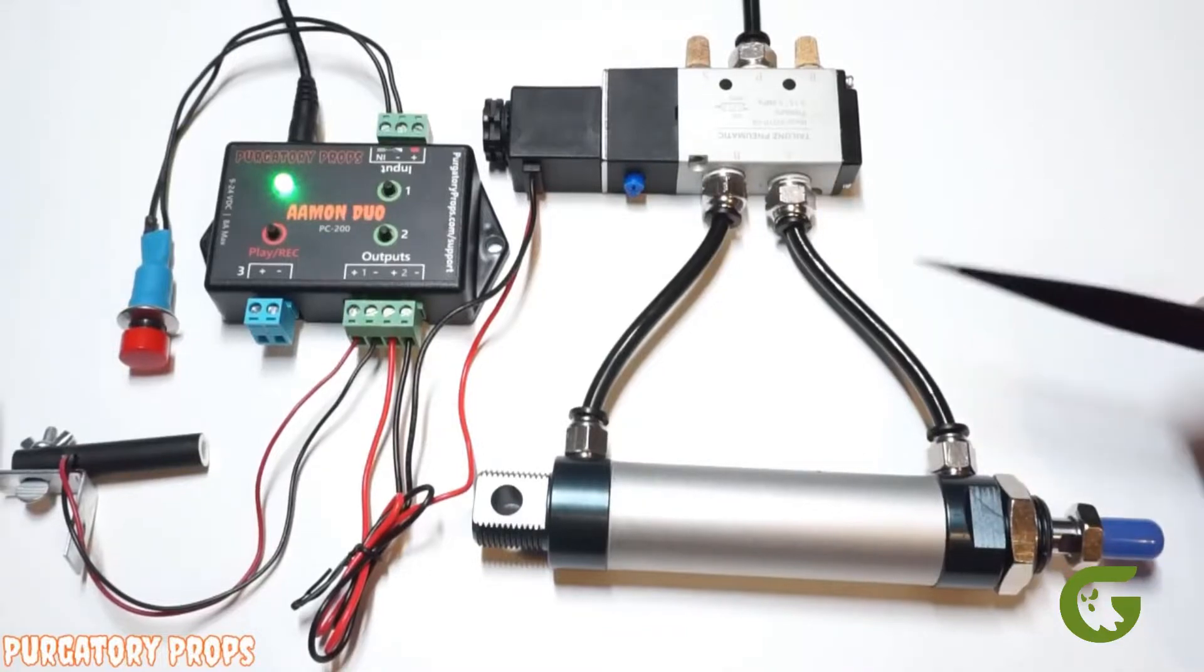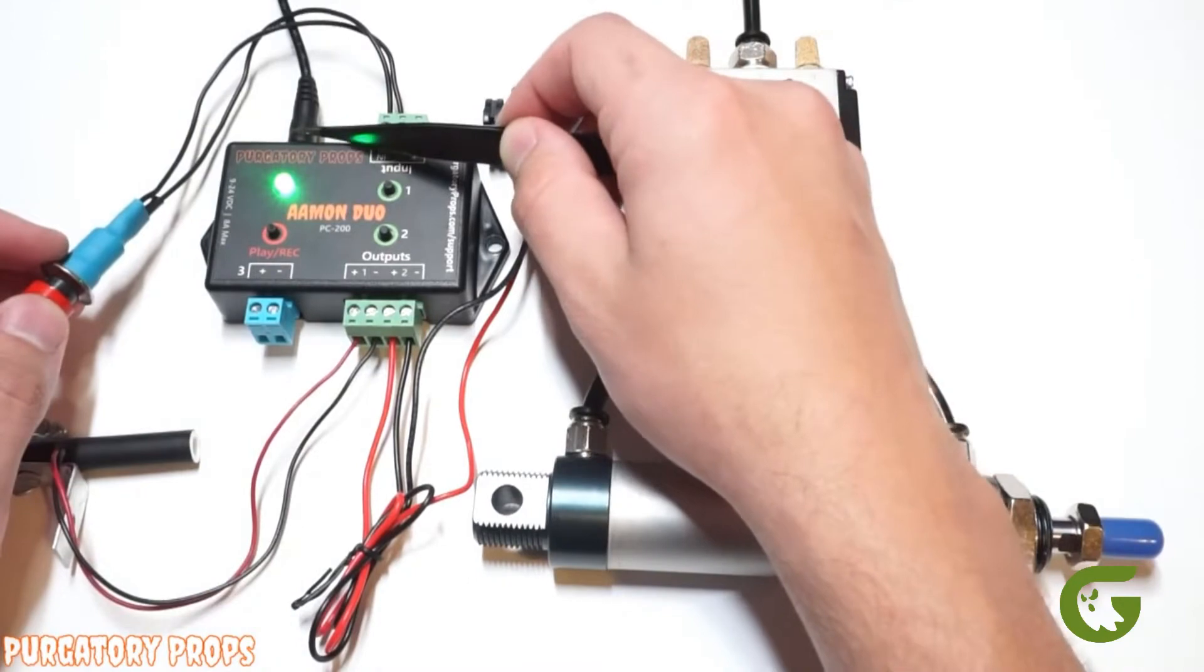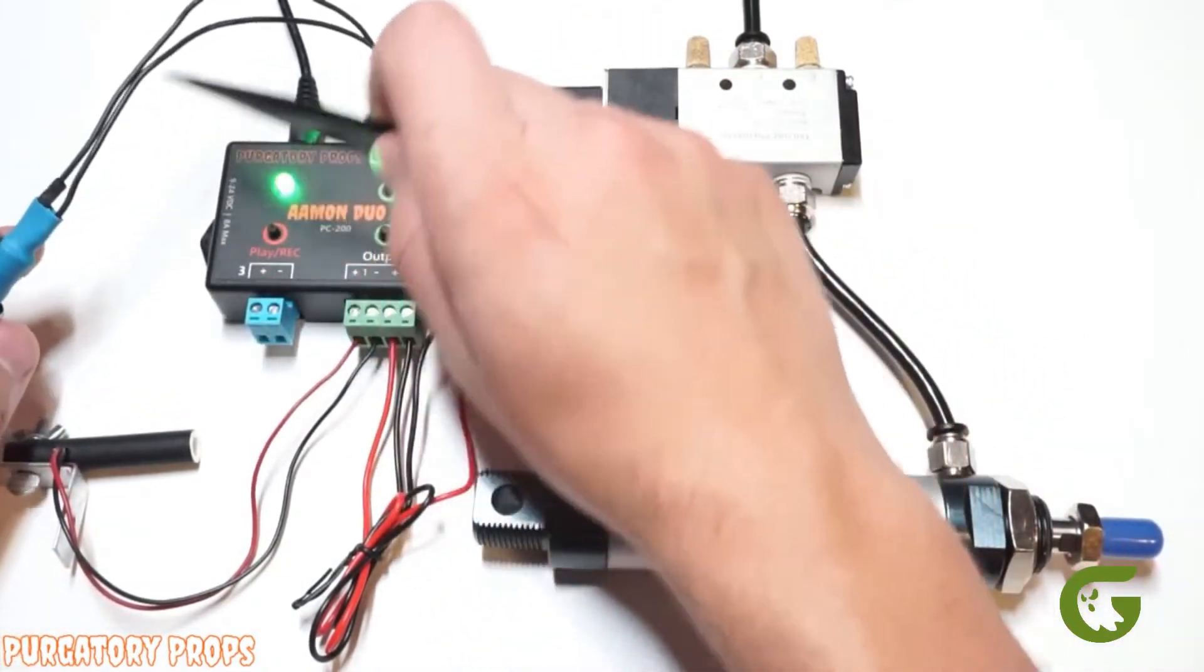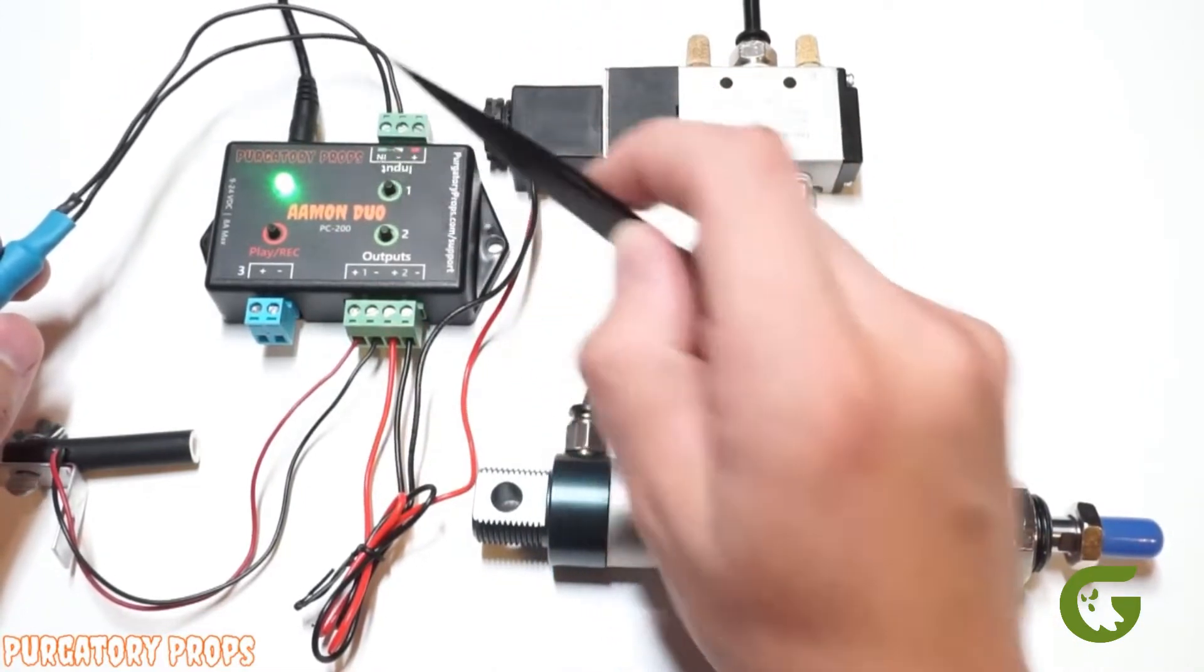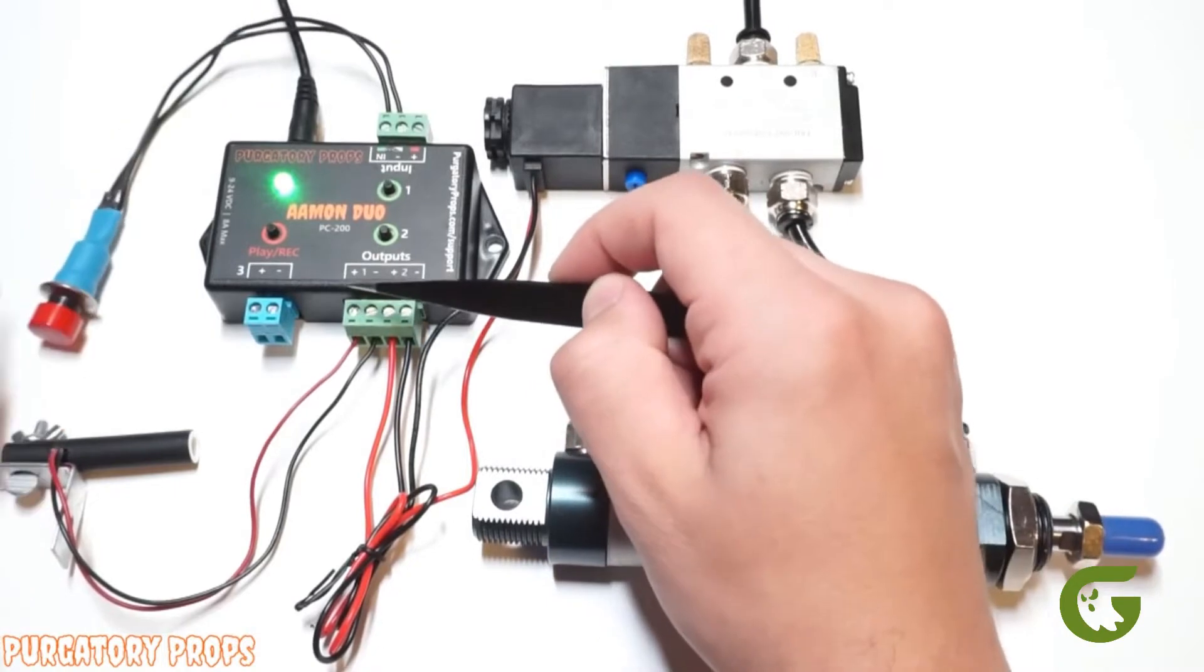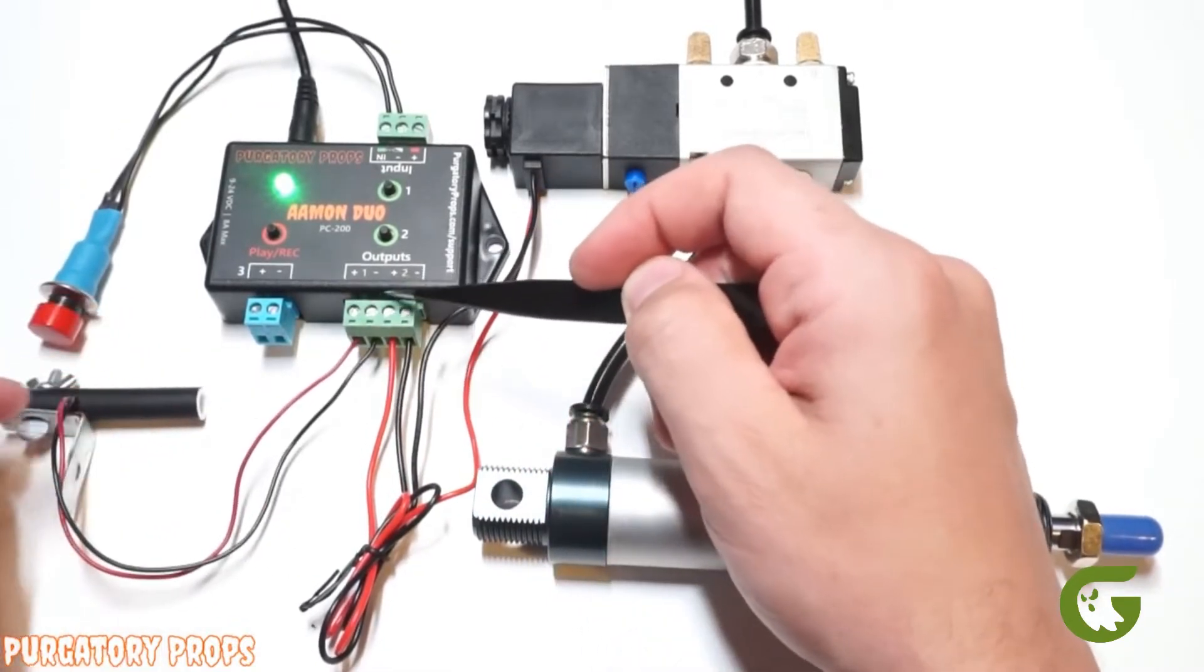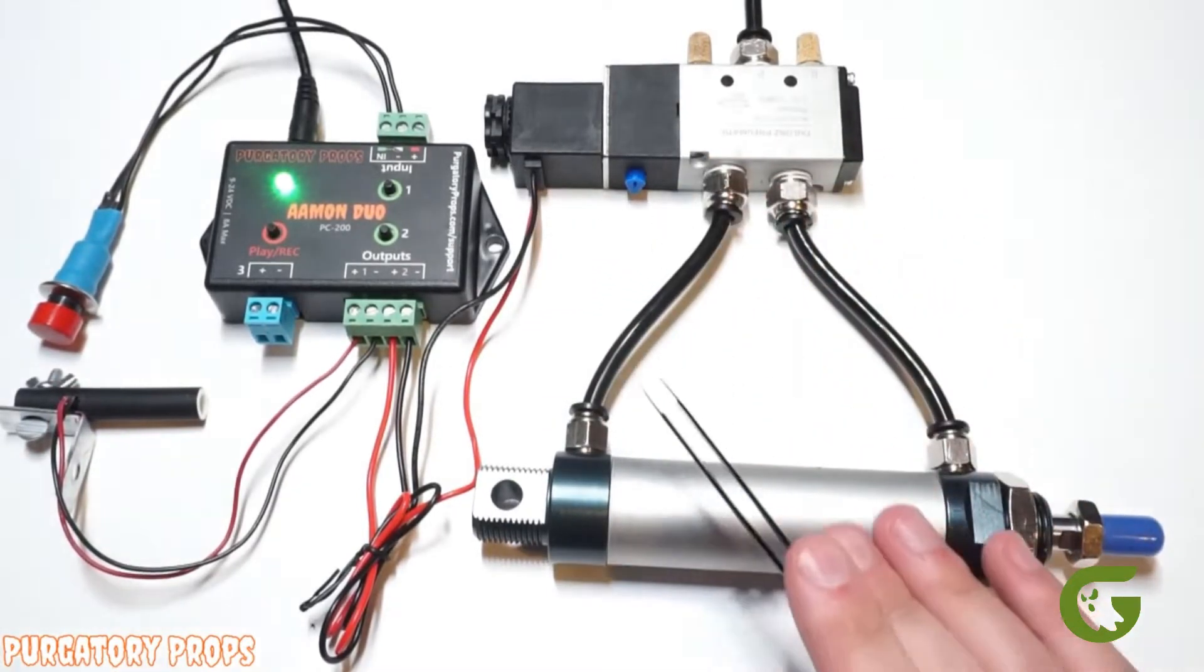So here we have an Amon Duo that's already all pre-wired. We have 12 volts coming in on the DC jack and then we just have a simple push button trigger. Part of the push button is connected to the negative and the other part is connected to the end. On the outputs, for output one we just have a simple 12 volt LED, and then output two we have a solenoid connected to an air cylinder.